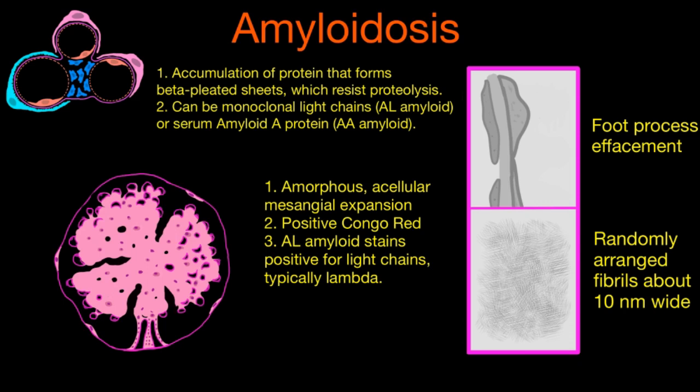If we did a kidney biopsy in a patient with amyloidosis causing nephrotic syndrome, on the H&E stain you would see an expanded mesangium — the glue that holds the capillaries and tufts together is markedly expanded. The glomerulus is huge and has been replaced by an amorphous, acellular material. The capillary loops, instead of being open, are getting compressed and closing off due to expansion of this mesangial material — which is the amyloid itself building up inside the kidney.